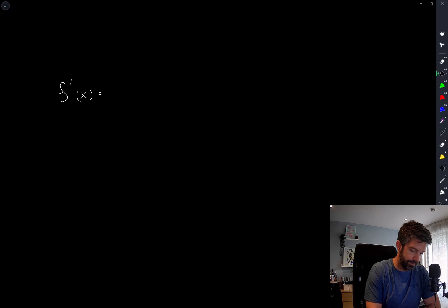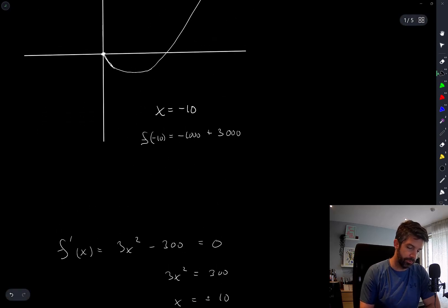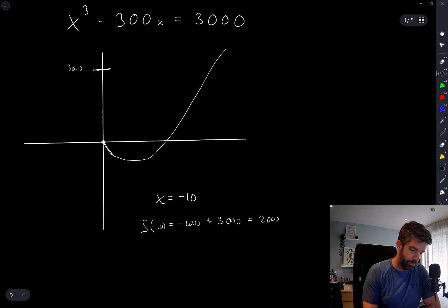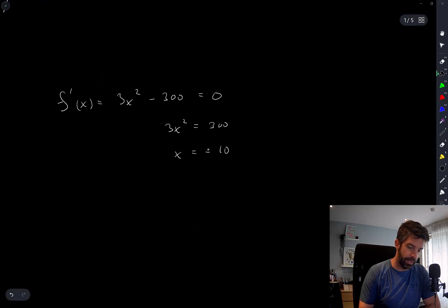F prime of x is equal to 3x squared minus 300. And if I set that equal to zero, I have 3x squared is equal to 300, so x is equal to plus or minus 10. Okay, so I think this pretty much answers our question. There's a local maximum at this value, which is clearly 2000. And so the function kind of turns around like that before it gets up as high as 3000. So the answer to this has to be exactly one solution.